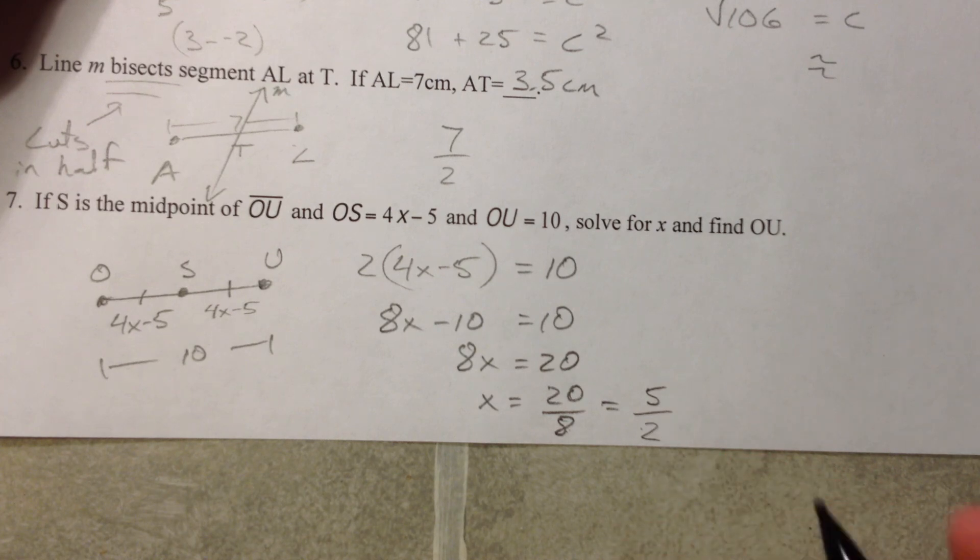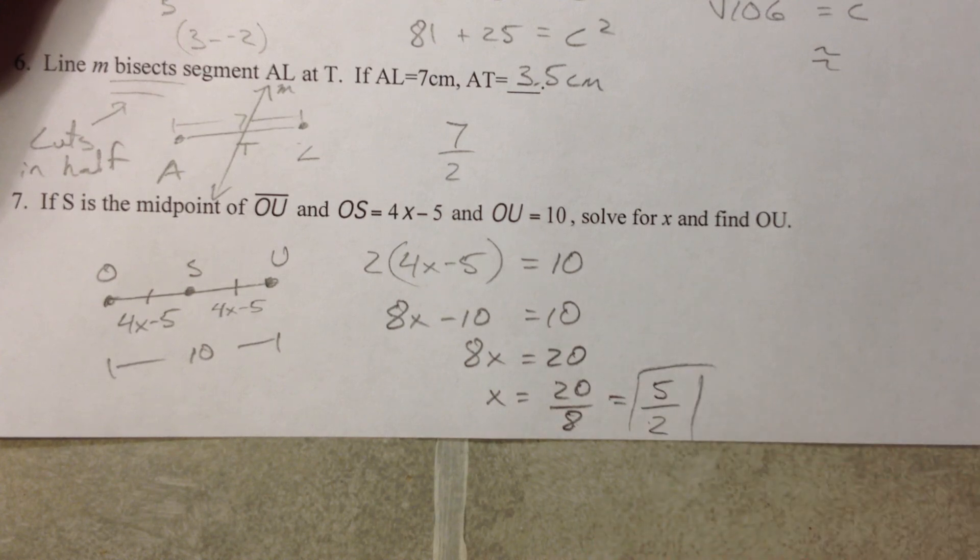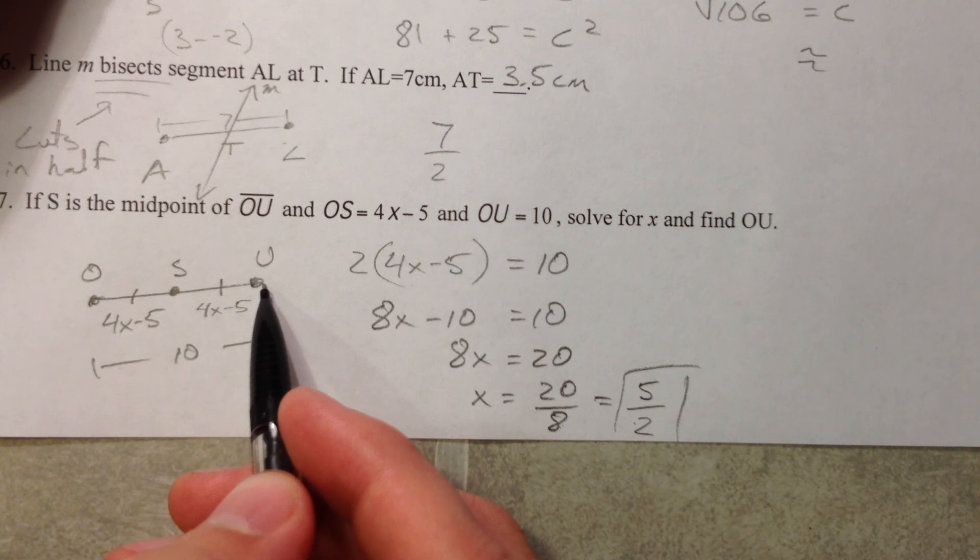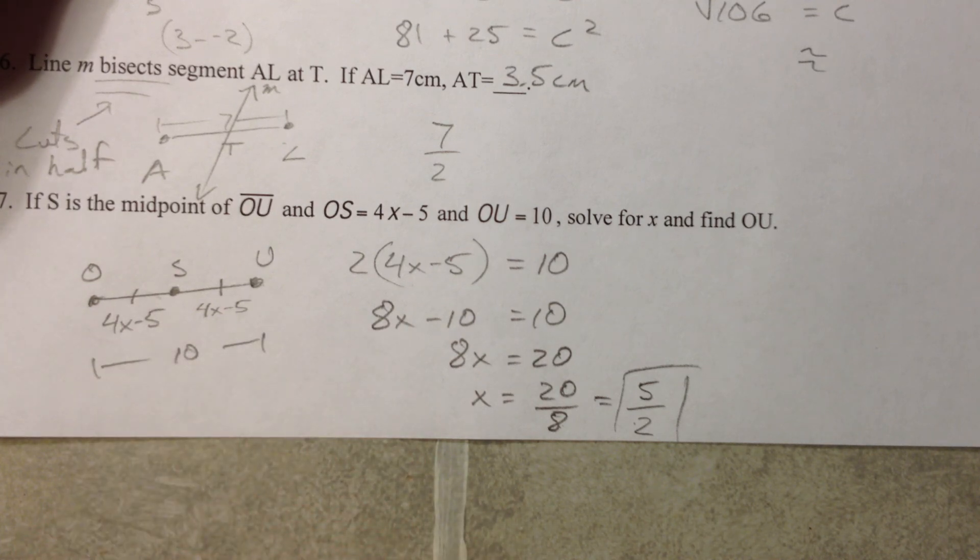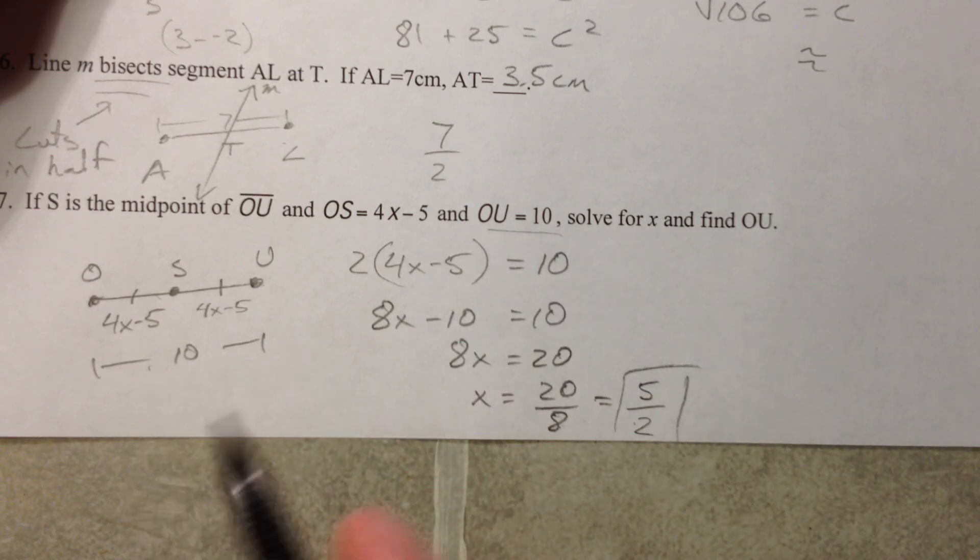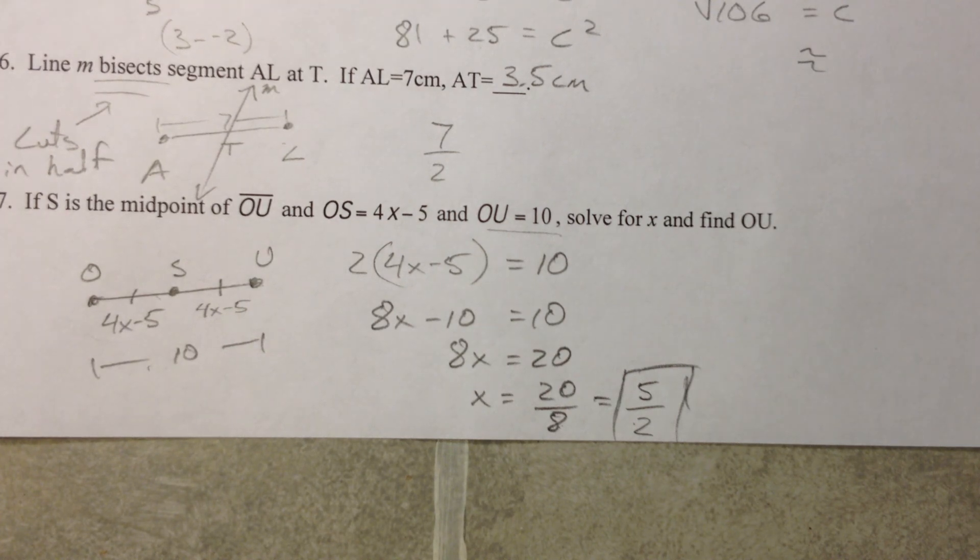So 5 halves. And so that is what X is and then find OU. OU is the whole thing and I guess that was a silly question, I should have asked what maybe 4X minus 5 was because I gave you OU, it was 10. So X is 5 halves. Congratulations that is the distance formula.